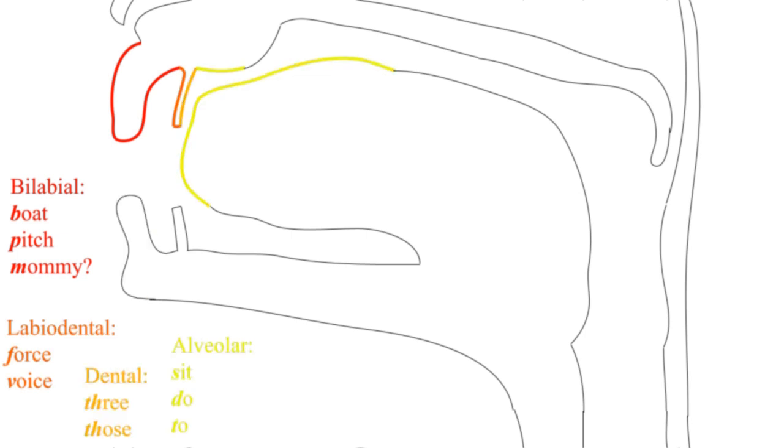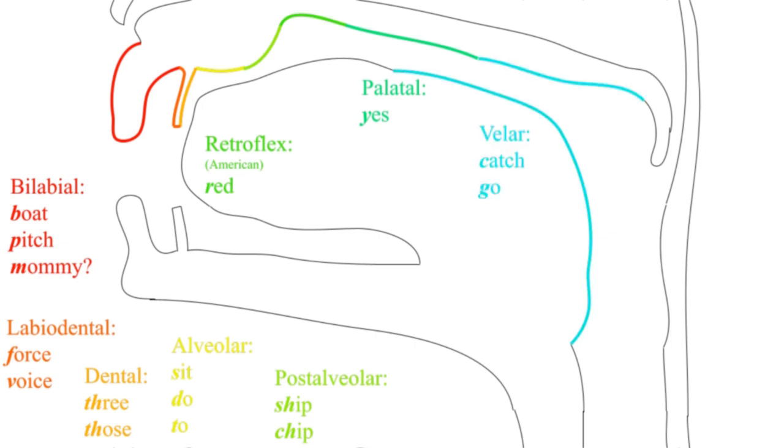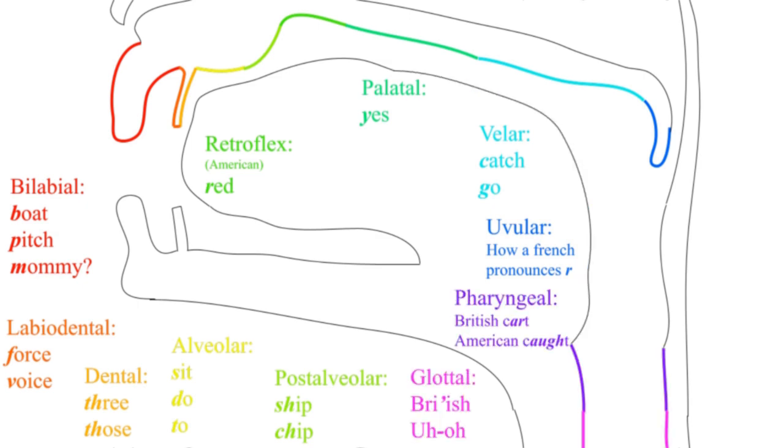The where is described by which two parts of the mouth come together: the top lip and the bottom lip, the top teeth and the bottom lip, the top teeth and the front tongue, the alveolar ridge and the front tongue, just behind that and the front tongue, hard palate and front tongue, hard palate and back tongue, soft palate and back tongue, that pink fleshy thing that dangles at the back of the throat and very back tongue, the front and back of the throat, and the folds of the glottis.